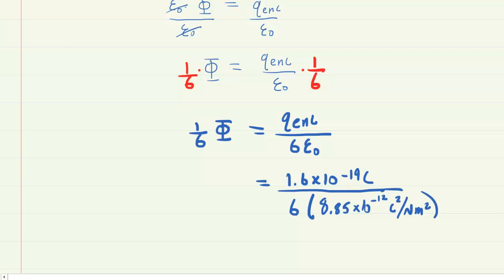So now we can pick up our calculators and divide this out. And when we do so, we will get a value for the electric flux through one side of that square as about 3.0 times 10 to the negative 9th.